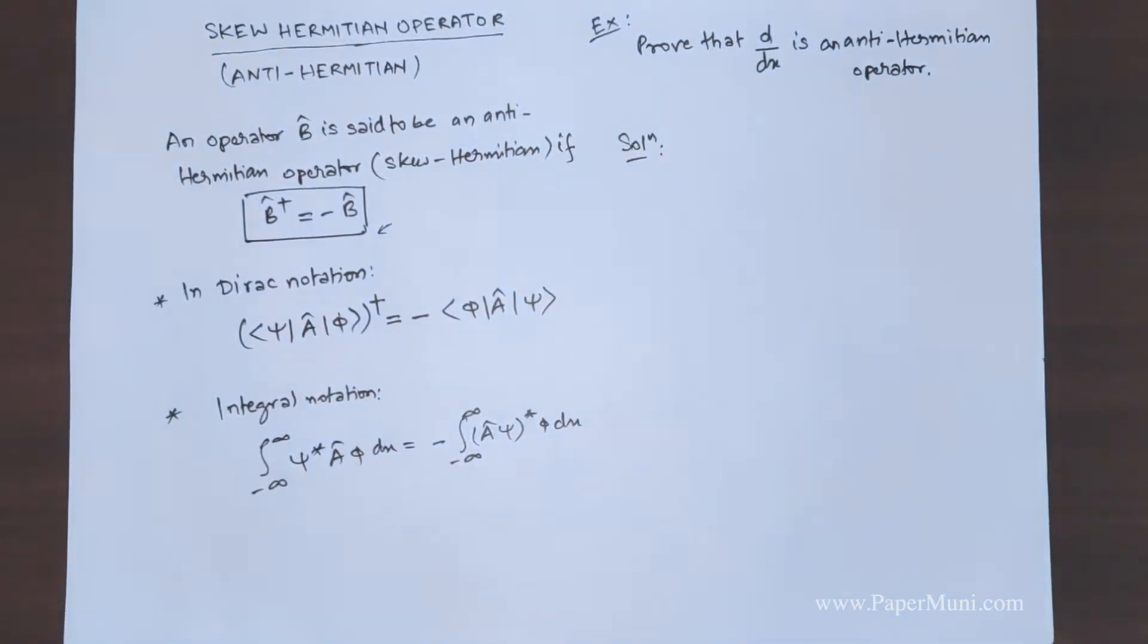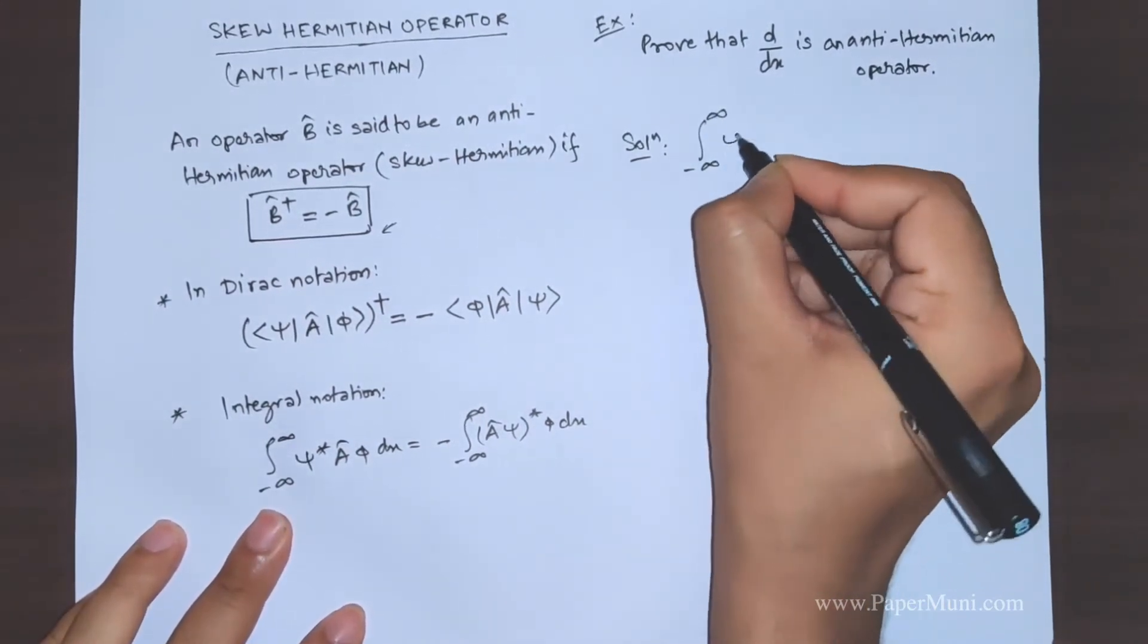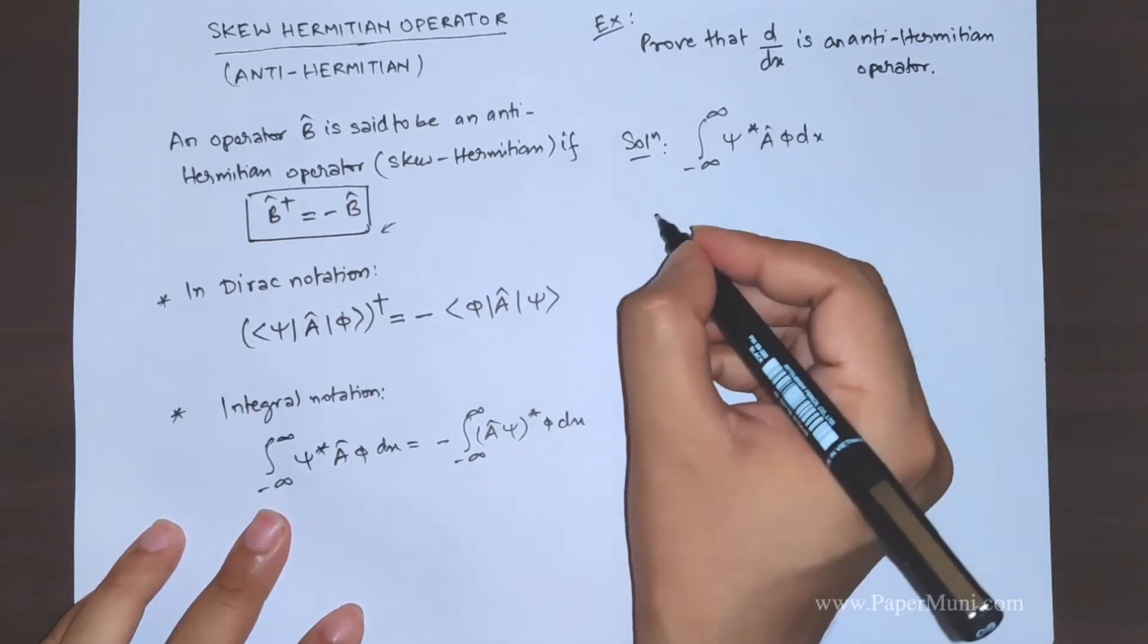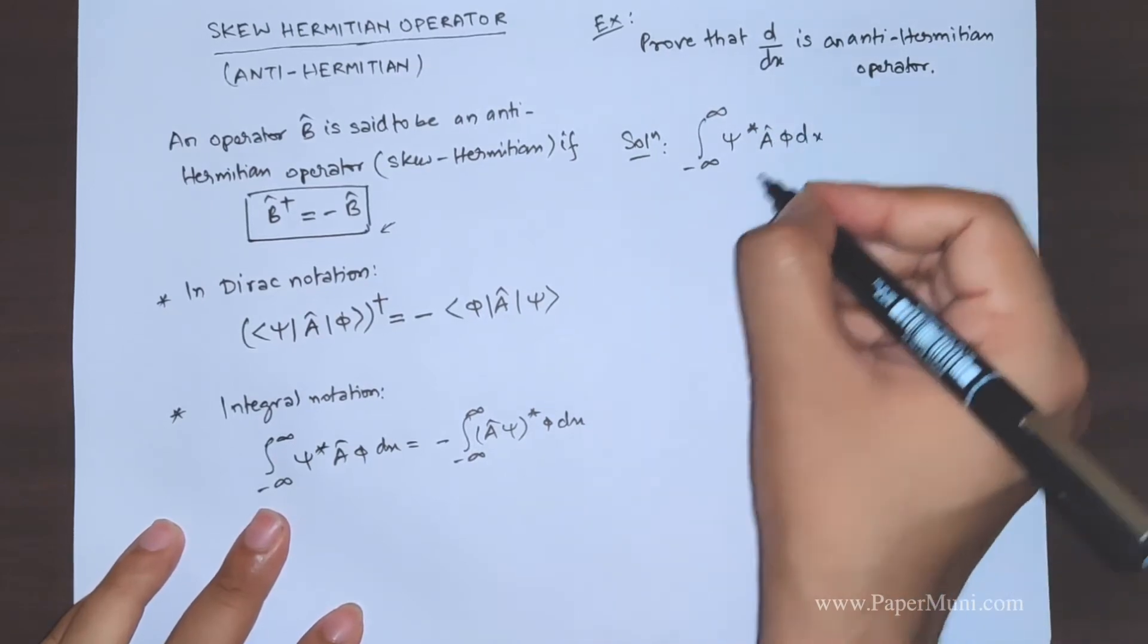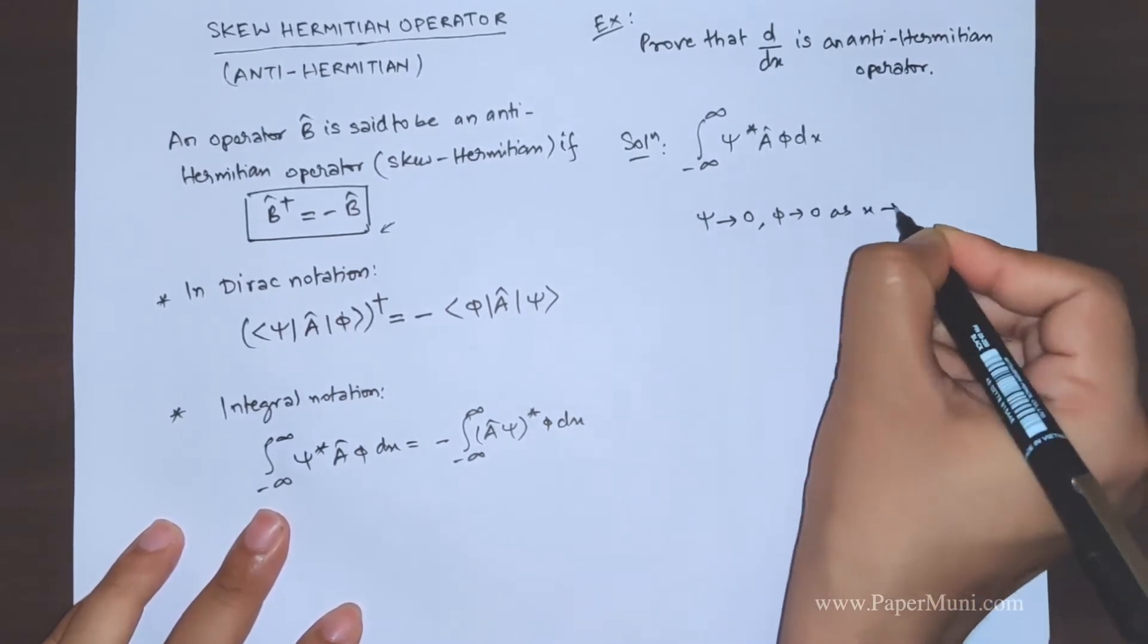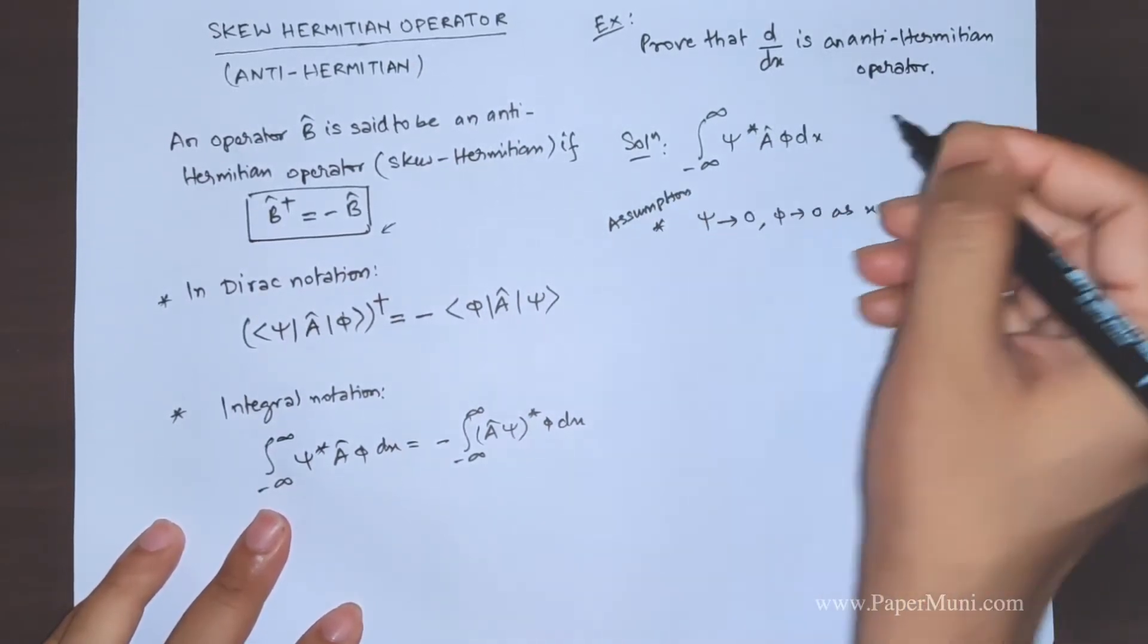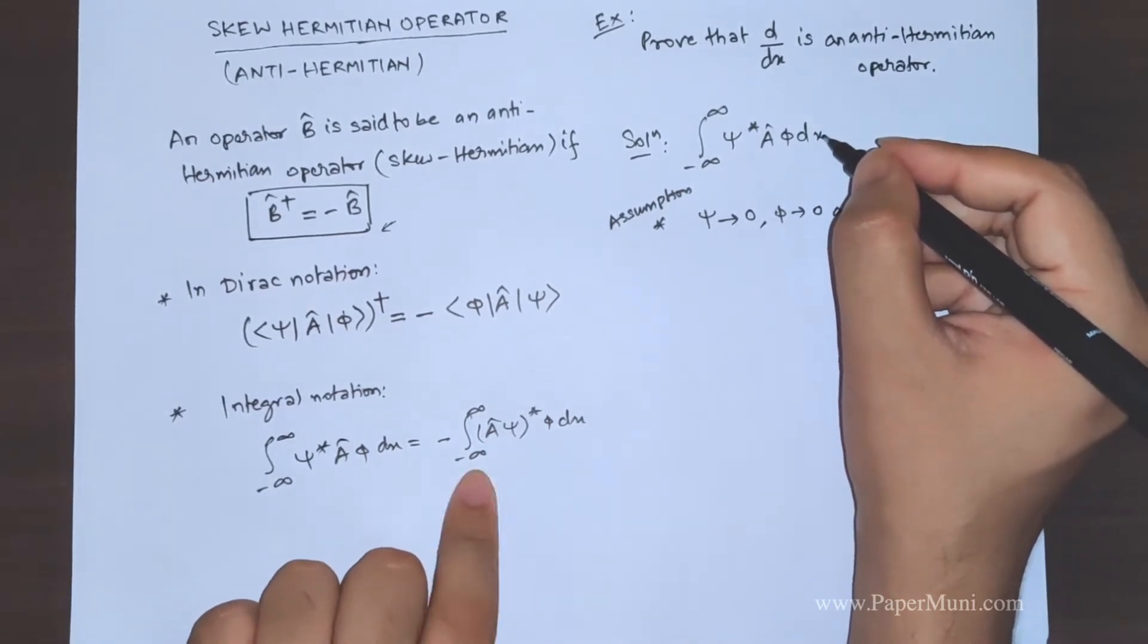Now we'll start with the left hand side and we'll assume that psi and phi are bound state acceptable wave functions, which means that psi and phi go to zero as x tends to plus minus infinity. This is the assumption made. Now we'll start with the left hand side and we need to get this result, this side.